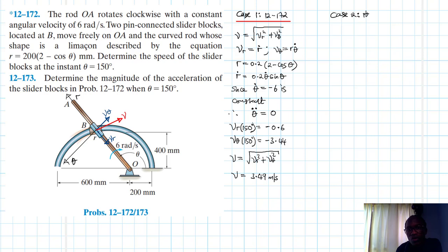Case two, which is 12-173. Let me create a boundary like so. What we have here is, so continuation, they are asking us to find the acceleration, magnitude of our acceleration, which is just a equal to the square root of ar squared plus aθ squared. Where our ar is just equal to r double dot minus r θ dot squared. And our aθ is just equal to r θ double dot plus 2 r dot θ dot. Check on how to derive this.